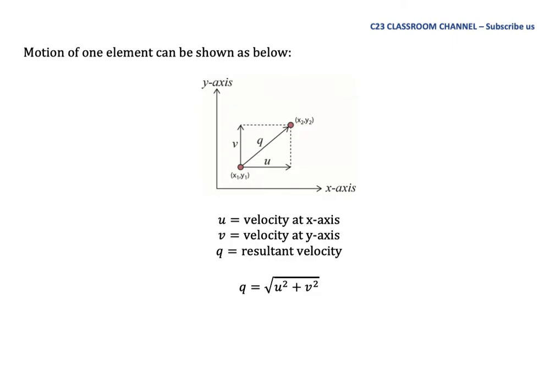Let's say we have a motion of a molecule here. For example, we have one element with coordinate (X1, Y1), and then it moved to a new location with coordinate (X2, Y2).